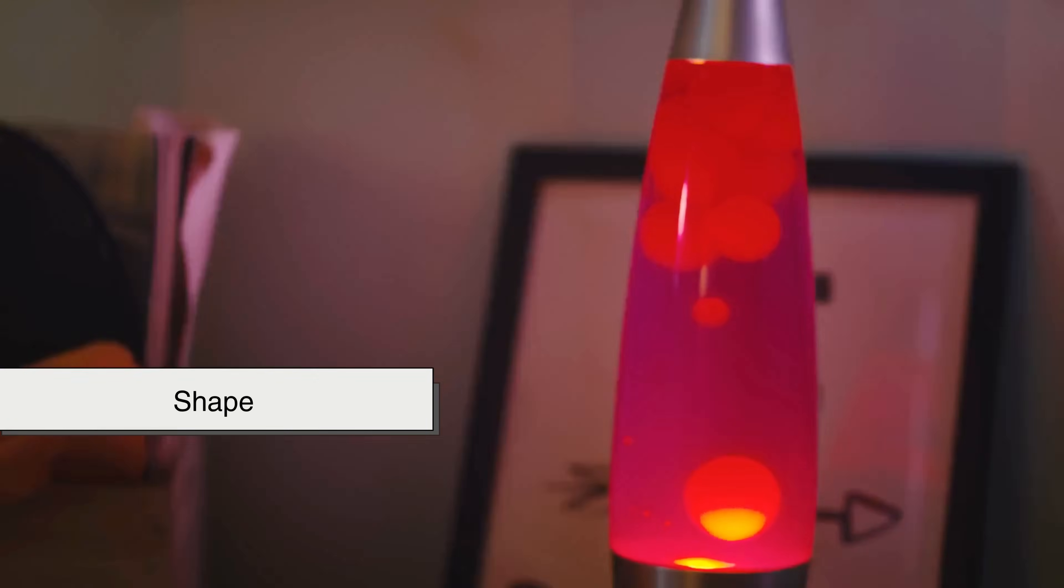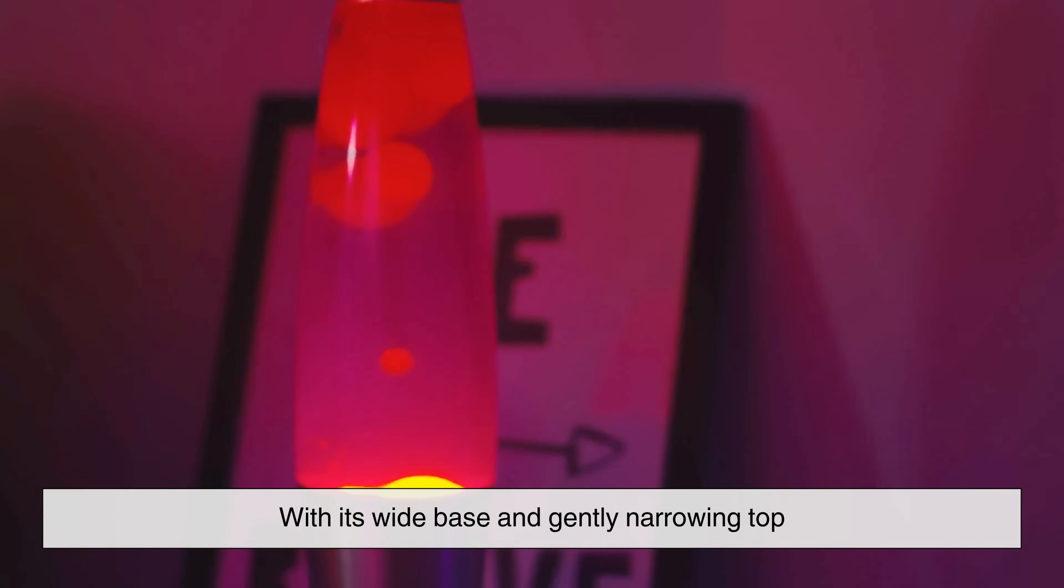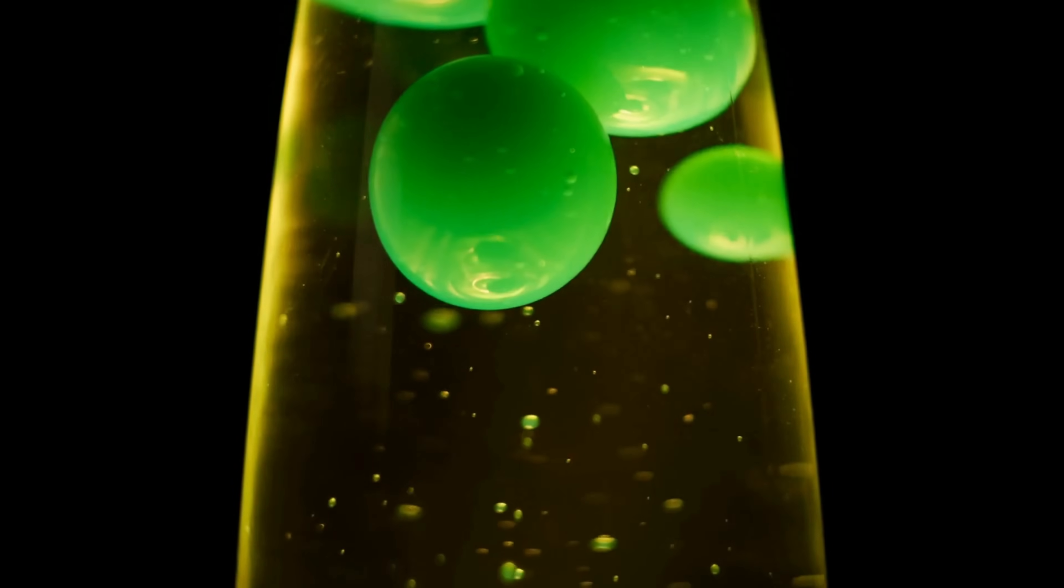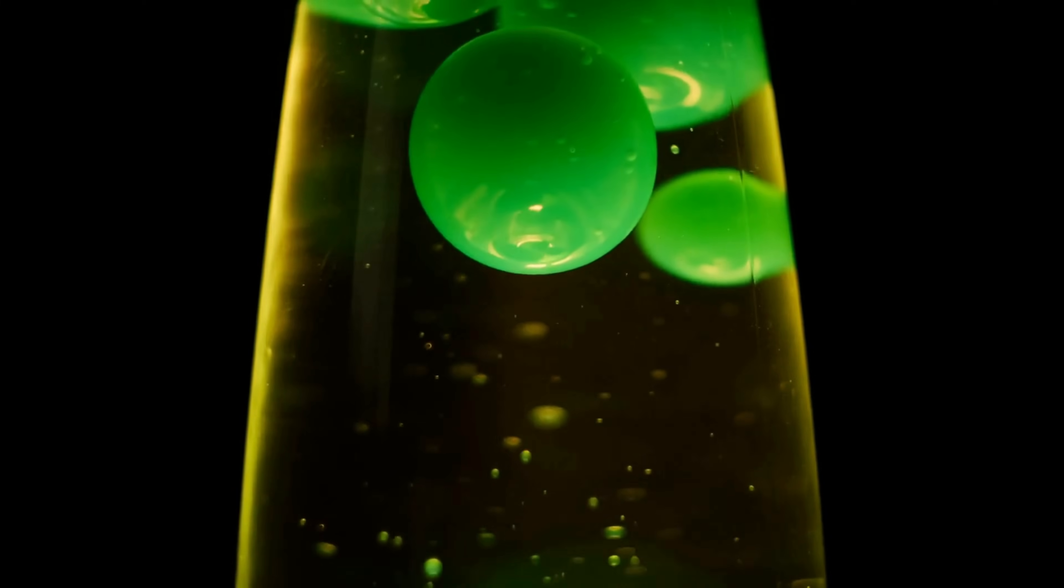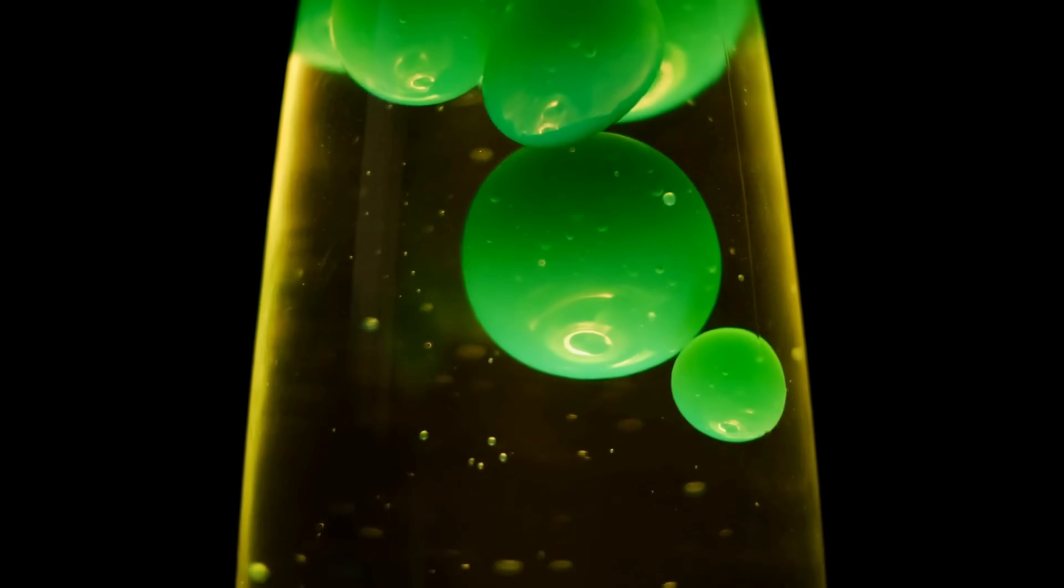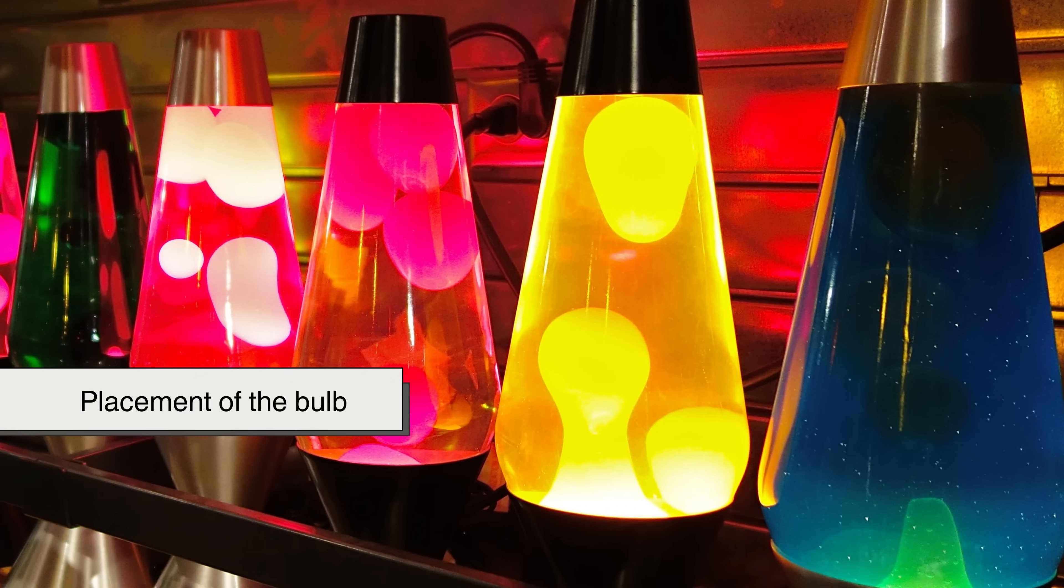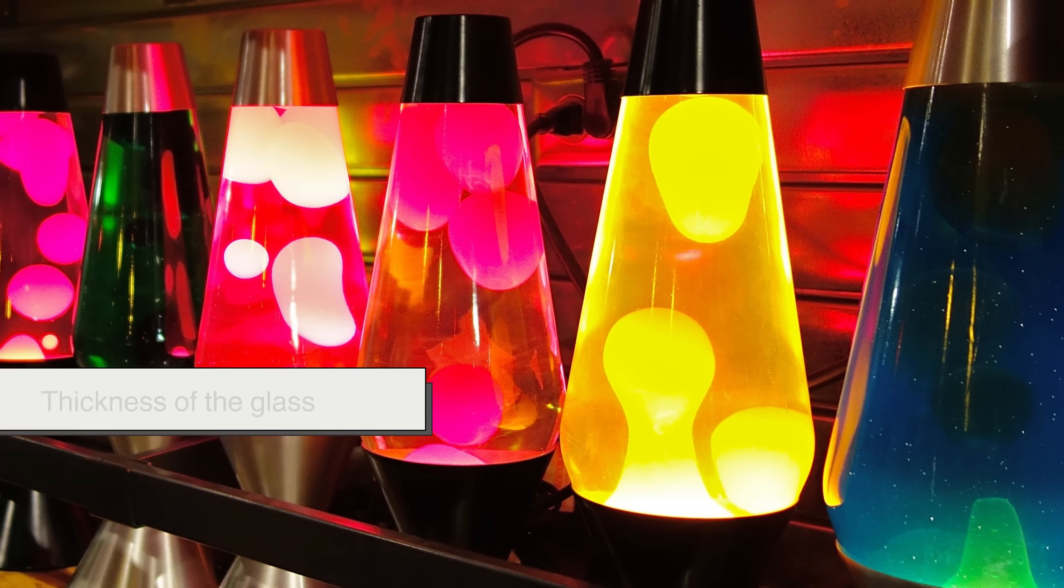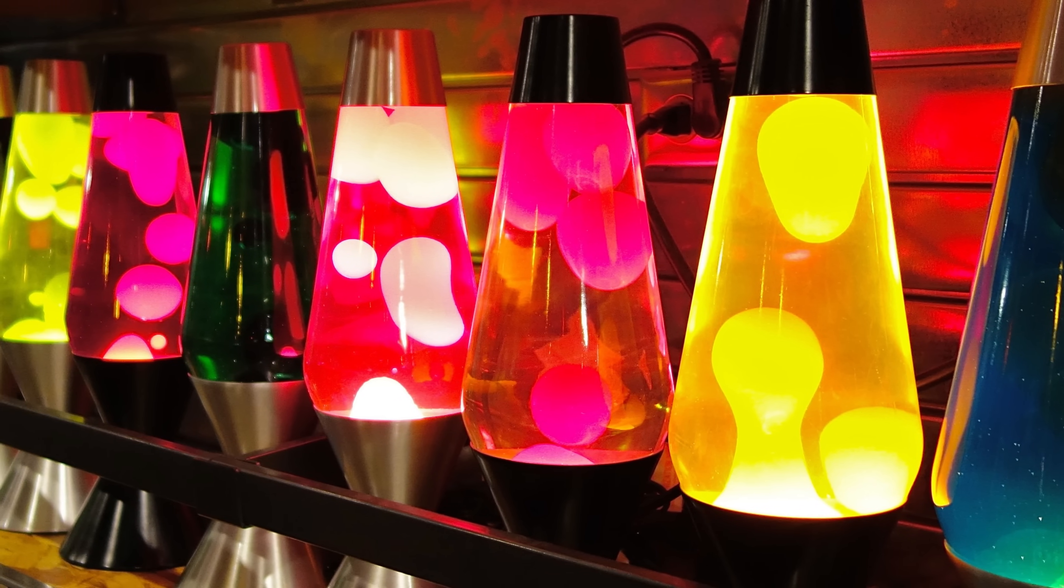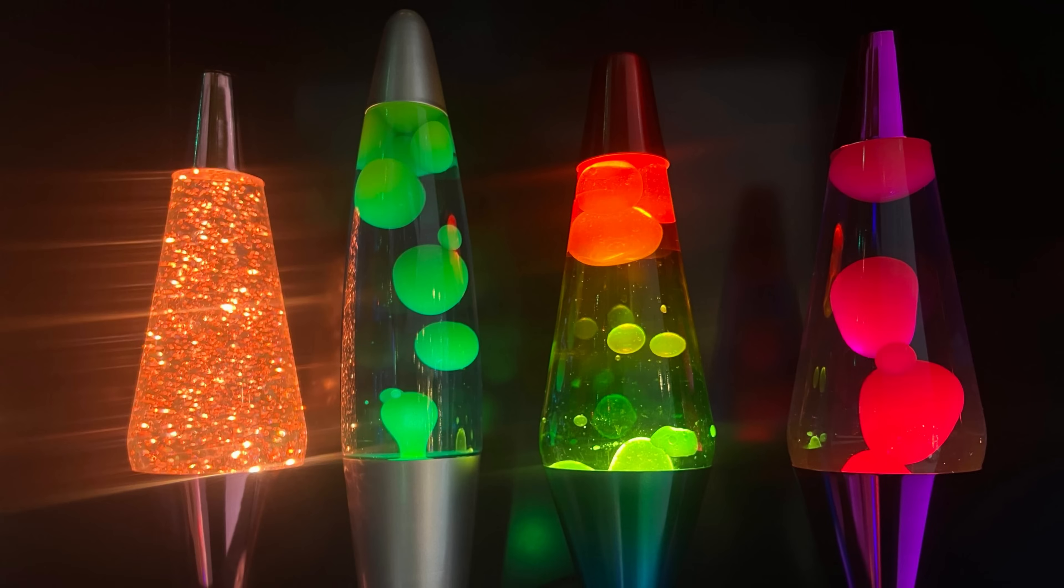Even the shape of the lamp plays a functional role. The classic lava lamp shape, with its wide base and gently narrowing top, is more than just retro design. That curved form encourages the wax to rise in the center where the heat is most intense and then cool near the sides and top, guiding it back down naturally. Without this shape, the flow could become chaotic or inefficient. Every curve, every taper, contributes to the lava's motion. Even the placement of the bulb, the thickness of the glass, and the volume of the fluid are all part of a system that's been meticulously engineered to do something that looks entirely effortless.